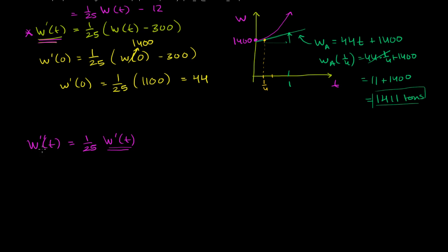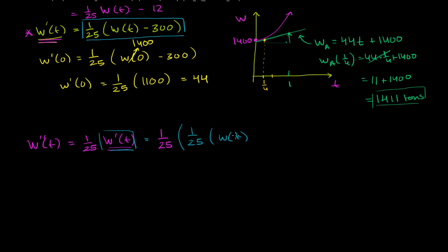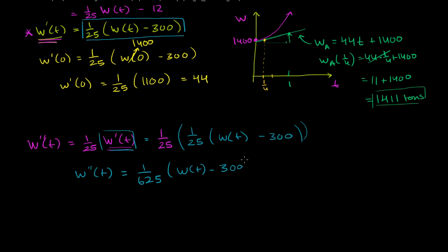The question asks us to write the second derivative in terms of w. We know how to express the first derivative as a function of w — the differential equation tells us dw/dt equals (1/25)w(t) minus 300. So substituting, we get (1/25) times [(1/25)w(t) minus 300], which gives us the second derivative equals (1/625)w(t) minus 300. We've found the second derivative of w in terms of just w.